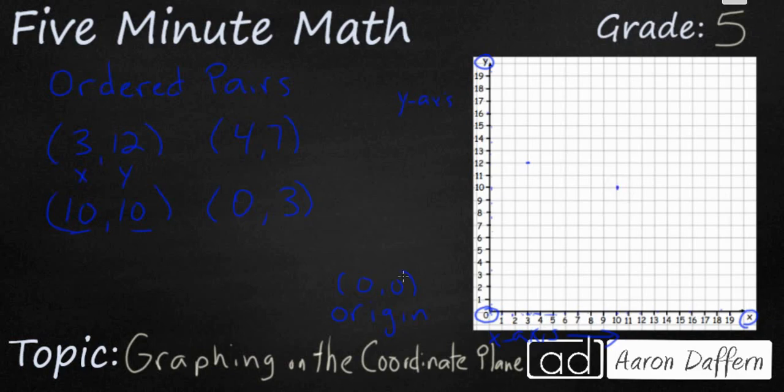And sometimes these points will make a pattern. Sometimes they're random. In this case, I just picked some random ordered pairs. So 4 comma 7, we go over 4, and then we're going to go up 7.